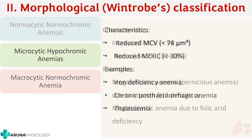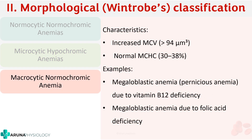Finally, macrocytic normochromic anemia has an increased MCV. As the name suggests, the cells are large (macrocytic), so MCV is elevated while MCHC is normal. The classic examples are megaloblastic anemias, which can be caused either by vitamin B12 deficiency or folic acid deficiency.